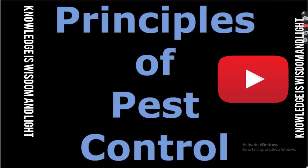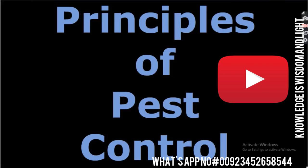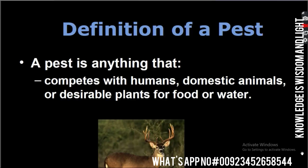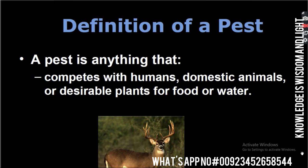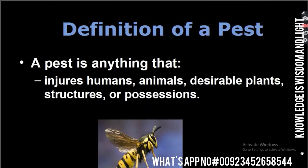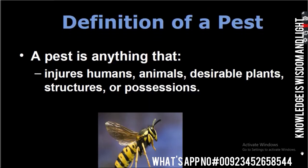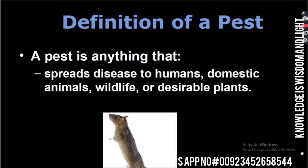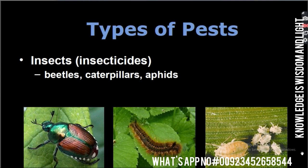Today our topic is principles of pest control. Definition of a pest: a pest is anything that competes with humans, domestic animals, or desirable plants for food or water. A pest is anything that injures humans, animals, desirable plants, structures, or possessions. A pest is anything that spreads disease to humans, domestic animals, wildlife, or desirable plants.